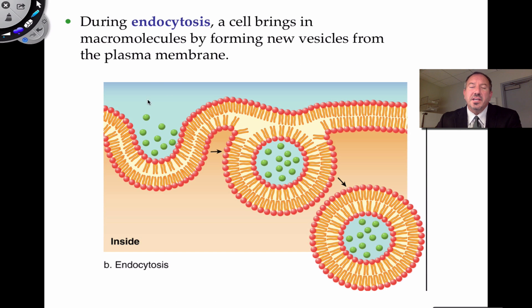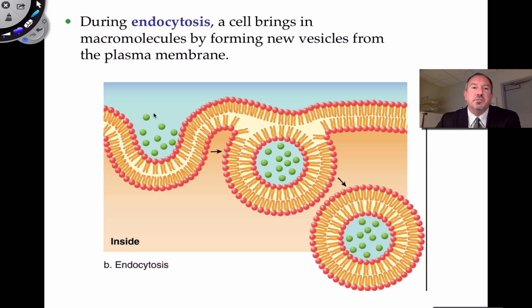When something is coming into the cell, we refer to it as endocytosis. It's not an ion, not an amino acid or glucose — the things coming in through endocytosis are large. They cannot go through the phospholipid bilayer and cannot enter through facilitated diffusion. They must be engulfed, and when they are engulfed by the cell, they form vesicles.